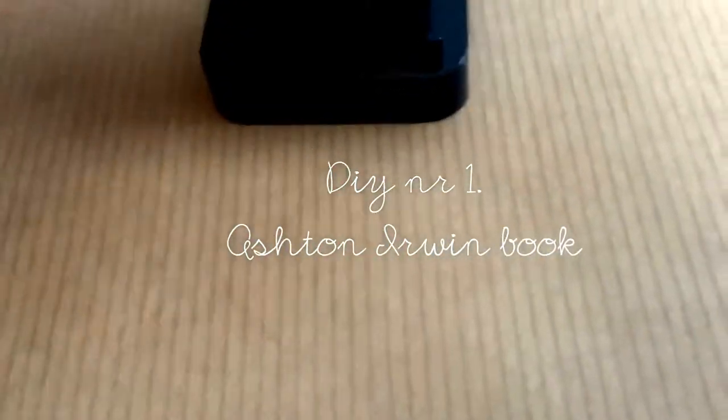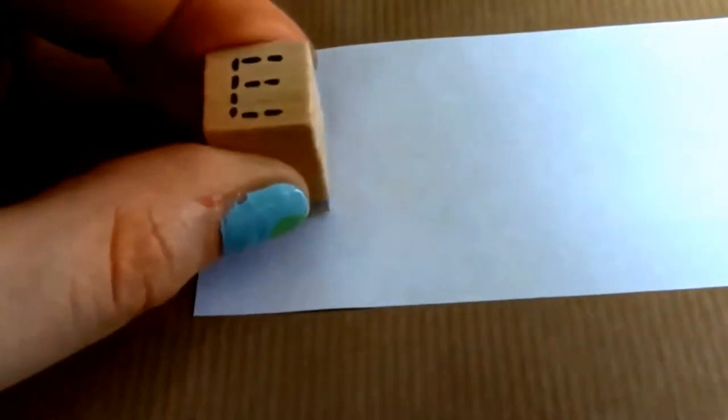The DIY number one is an Ashton Irwin inspired book. I used stamps for this one so I started with stamping an E on it, and then I wrote English on it.